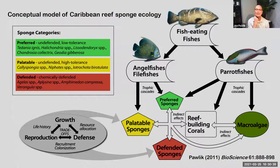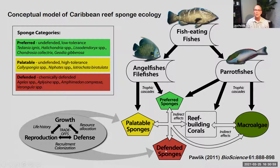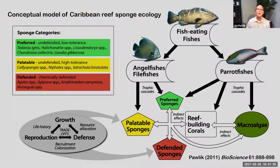By about 10 years ago, we were confident enough in all of these localized experiments to come up with a conceptual model of what we thought was going on on Caribbean reefs. Fish-eating fishes eat sponge-eating fishes and they have a differential effect on the different sponges depending on whether they're chemically defended, palatable, or preferred. We had enough species with figured-out chemical defense categories to say this was what we thought was going on — though this was still only the product of lots of localized experiments on reefs in the Bahamas and Florida, pretty much a conceptual model based on manipulative experiments.